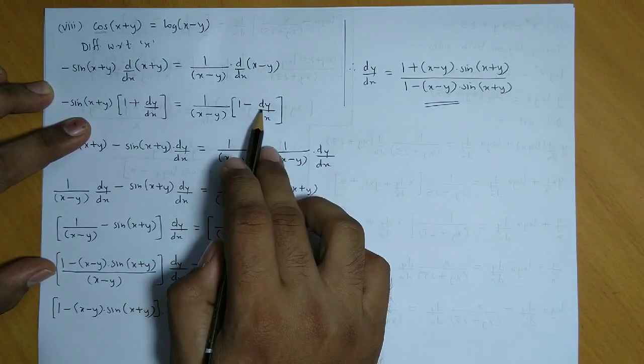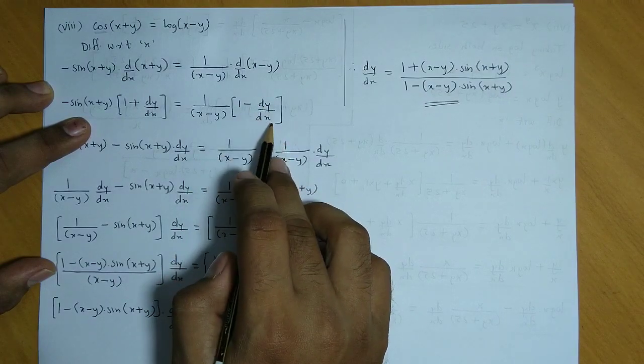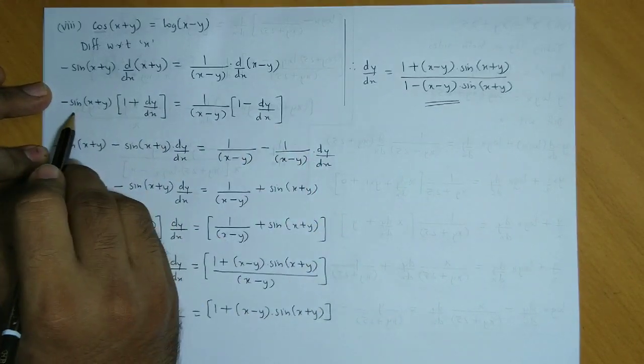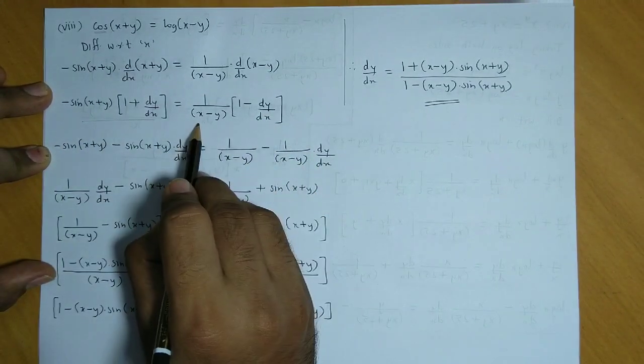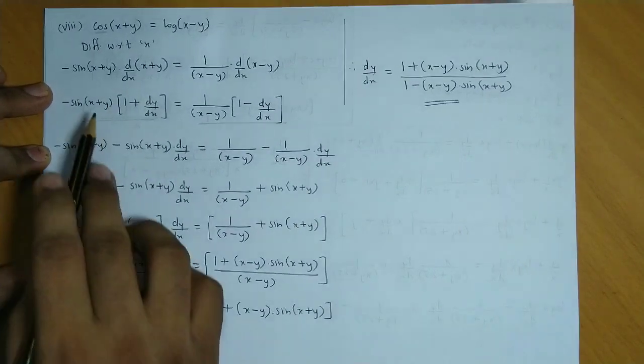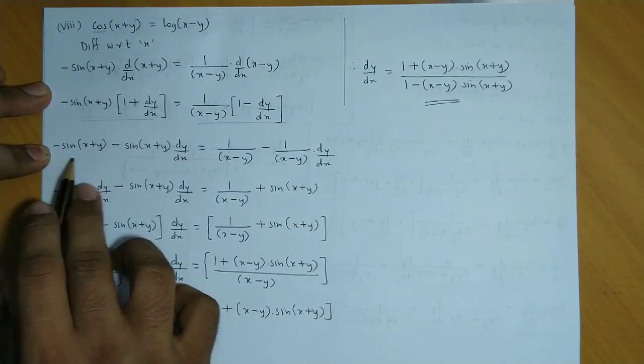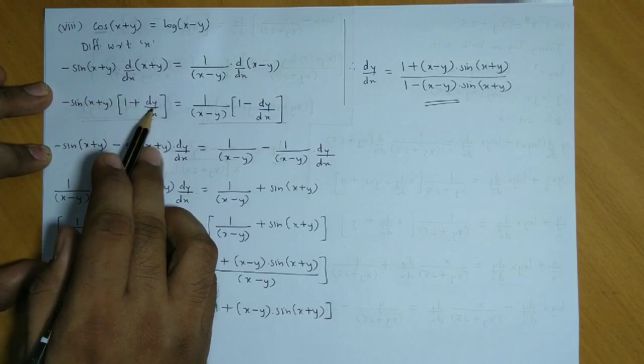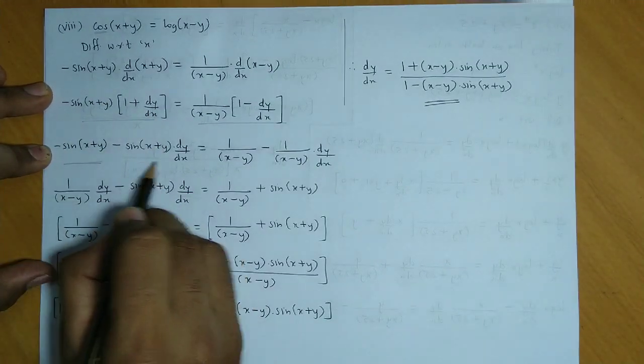Next step would be opening the brackets on both the sides. So here also open bracket, and on this side also open bracket. After opening the brackets, we get these four terms. This into 1 also, and this into dy by dx also. So these two terms will come here. Here also, this term into 1, then this term into dy by dx.